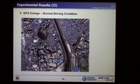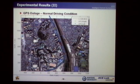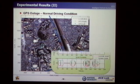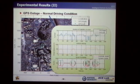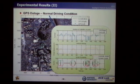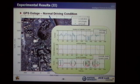We also performed tests under normal speed conditions. As you can see in this figure, the vehicle speed is over 50 km per hour, and the dynamic model probability is dominant.